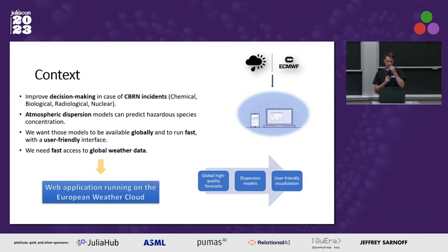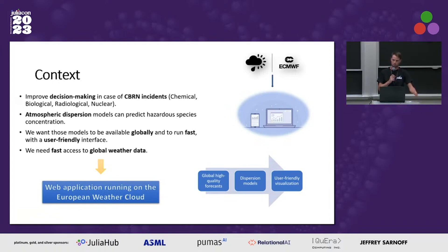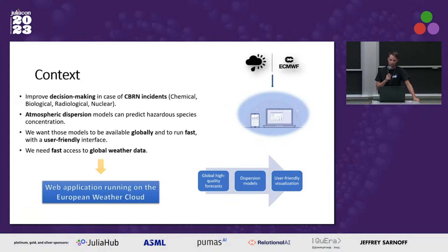Since those models are supposed to be used in case of emergency situations, we want them to be able to run fast and to run them across the whole world, with a user-friendly interface so that people who are experts in the field can run them anyway. Another requirement is that the input for such atmospheric dispersion models is the atmospheric weather state, so we need fast access to global weather forecast data.